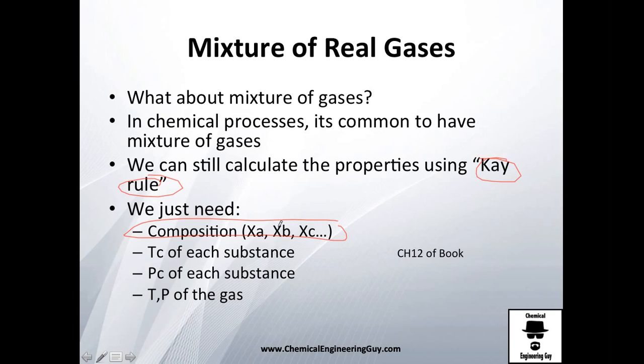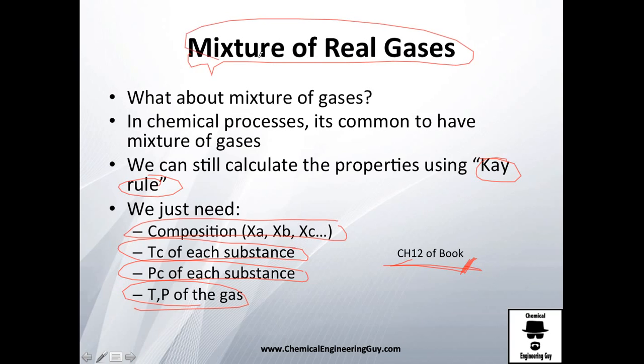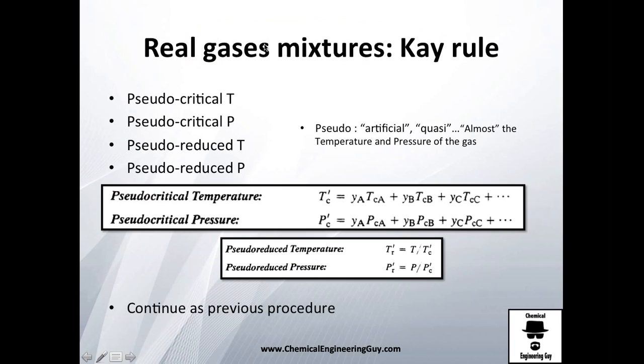We will need essentially the composition of the gas - because if you don't know it, well, you don't know what type of mixture you have. We're going to need the critical temperature of each substance, critical pressure of each substance, and the real temperature or pressure of the gas. This is typical for chapter number twelve of the book, but I'm going to present it to you because it's very common. It's so easy they introduce it to you very fast, and I don't want you to get disadvantaged because you don't know how to treat a mixture of real gases.